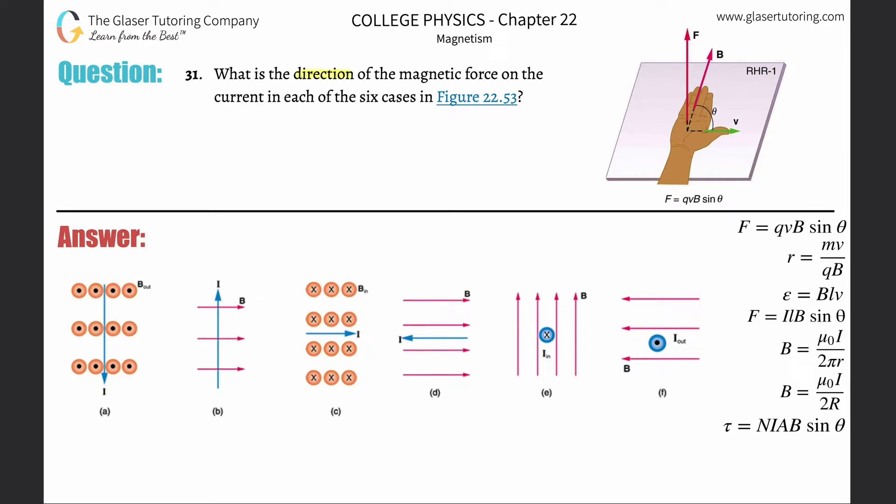Number 31: What is the direction of the magnetic force on the current in each of the six cases in figure 22.53? All right.